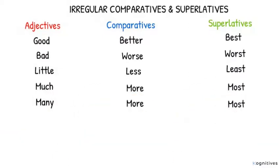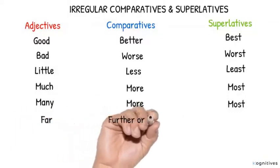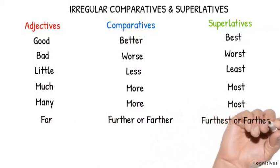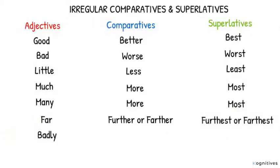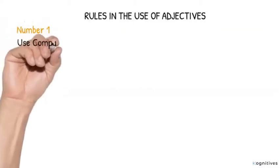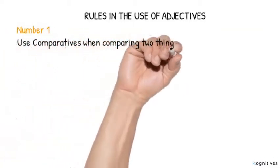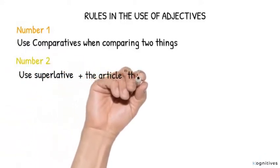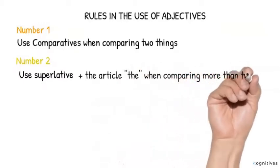Six: Far, it could be further or farther, and the superlative will have furthest or farthest. Number seven: Badly, worse, worst. Now let's look at rules in the use of adjectives. Number one: Use comparative when comparing two things. Number two: Use superlative plus the article 'the' when comparing more than two things.